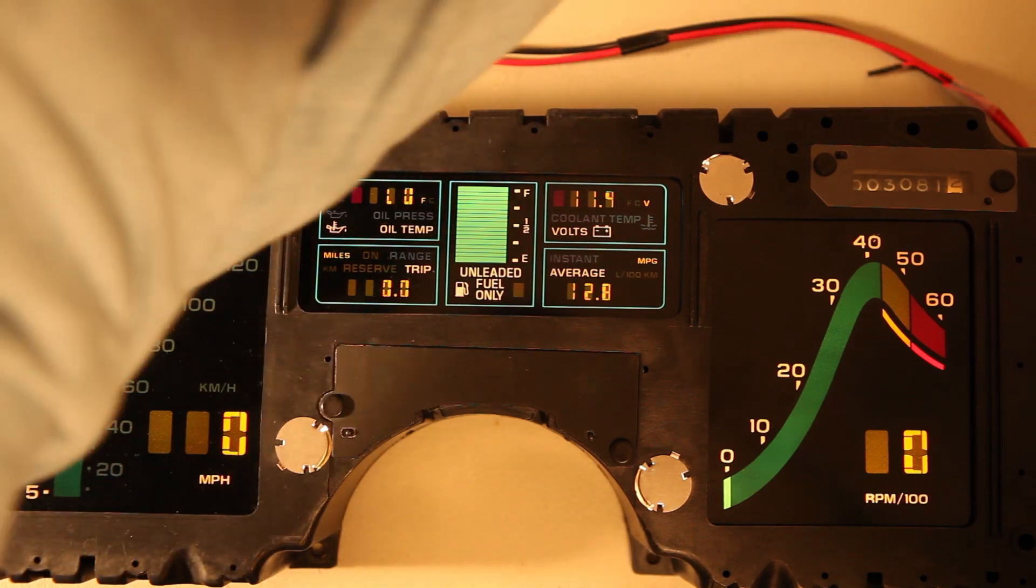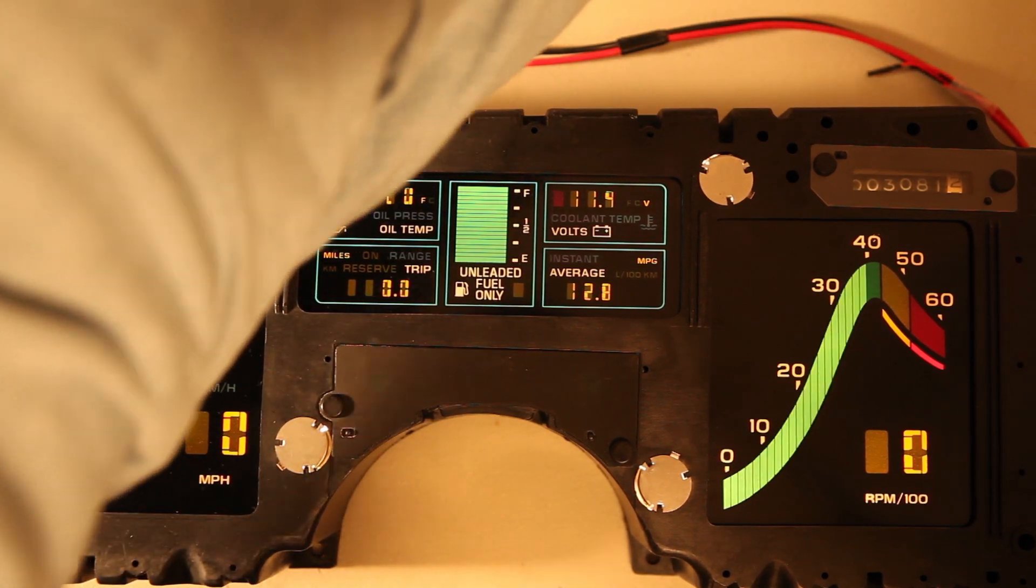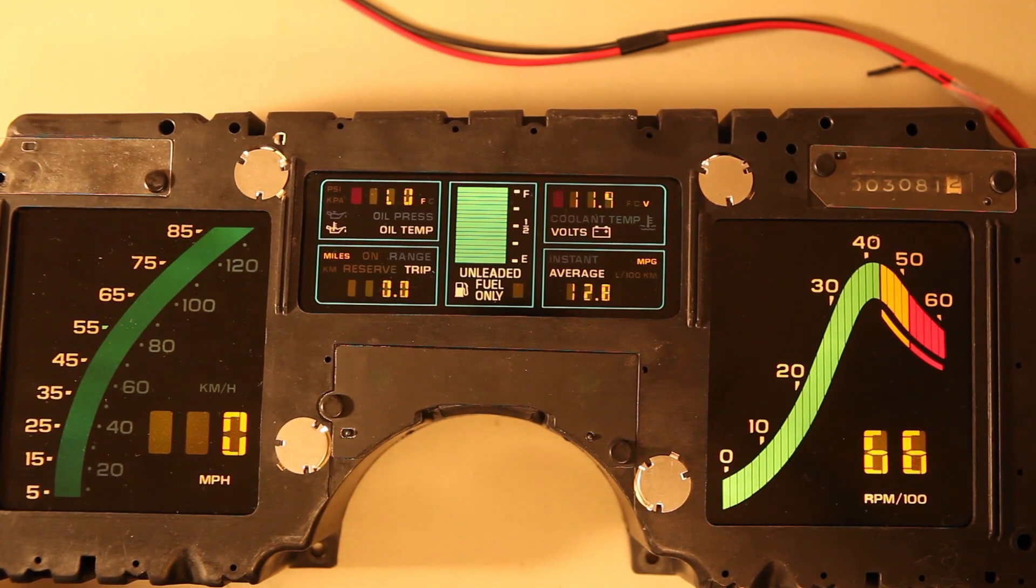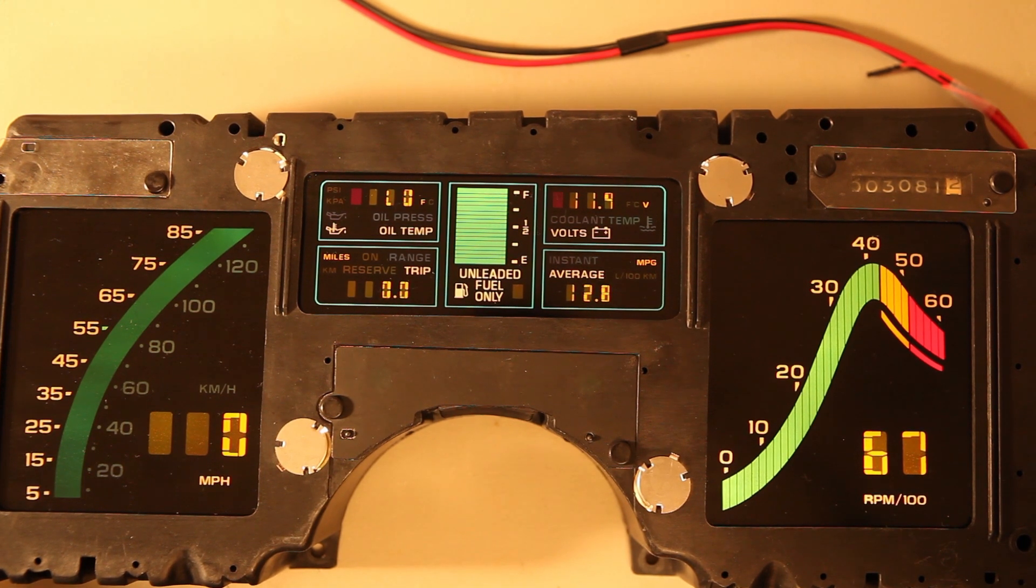I'll turn the signal generator on now. The tachometer is displaying exactly what it should, 6600 to 6700 RPM at 400 Hz.